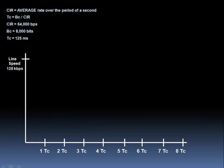Let's take a look at this graphically. Say we have a line speed of 128 kilobits per second, but our CIR is only 64,000 bits per second. How do we send at a rate less than the line rate? When we start to send, we have to send at the line rate, so we start to send at 128,000 bits per second.